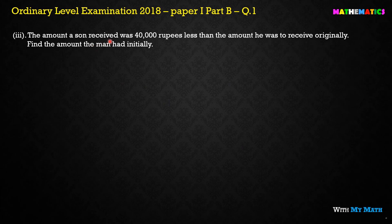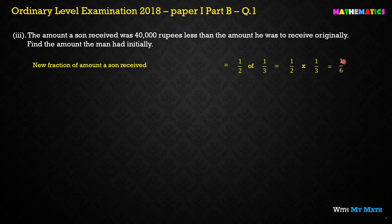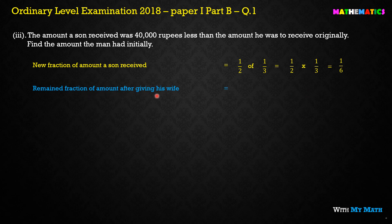Third question: the amount a son received was 40,000 rupees less than the amount he was to receive originally — find the initial amount the man had. The new fraction of amount a son received is 1/2 multiplied by 1/3, which equals 1/6. So each son receives 1/6 of the total. The remaining fraction after giving the wife was already calculated as 3/5 of the original plan.